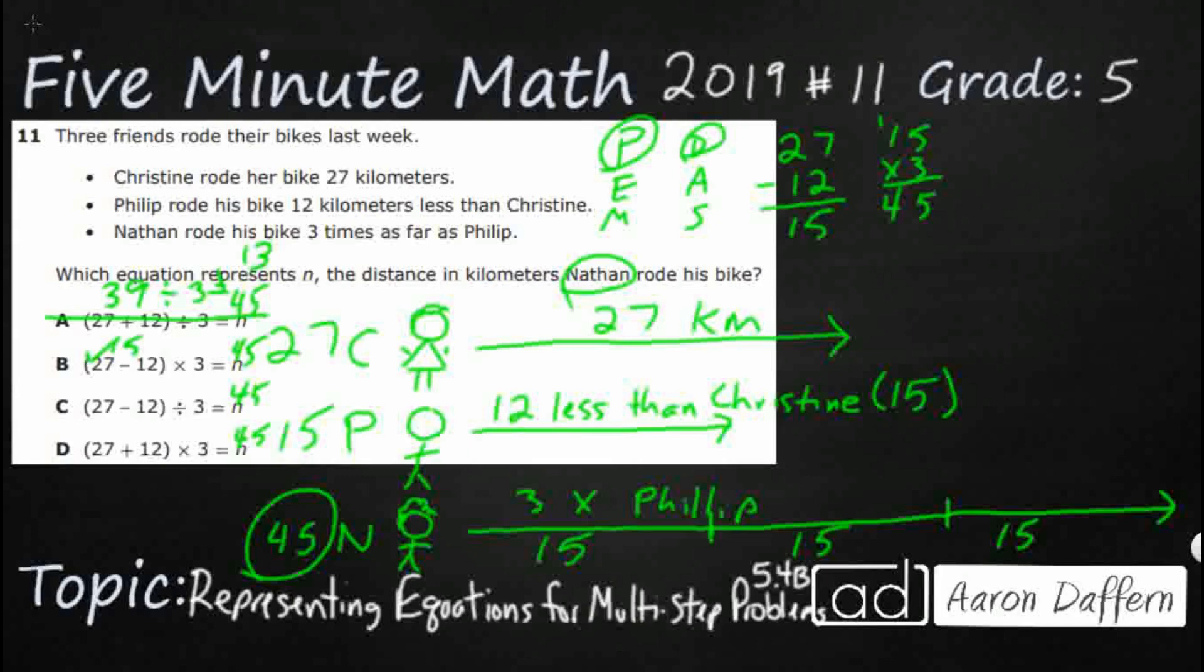So we did 27 minus 12, that is 15, oh, but look, in C they divided by 3, so that is going to get you 5, and he went 3 times as far, not divided, so C is going to be wrong.